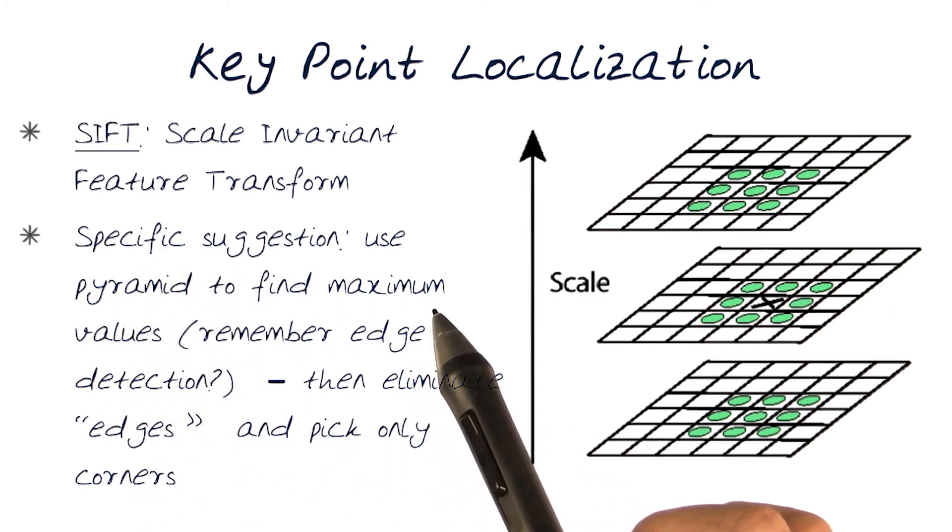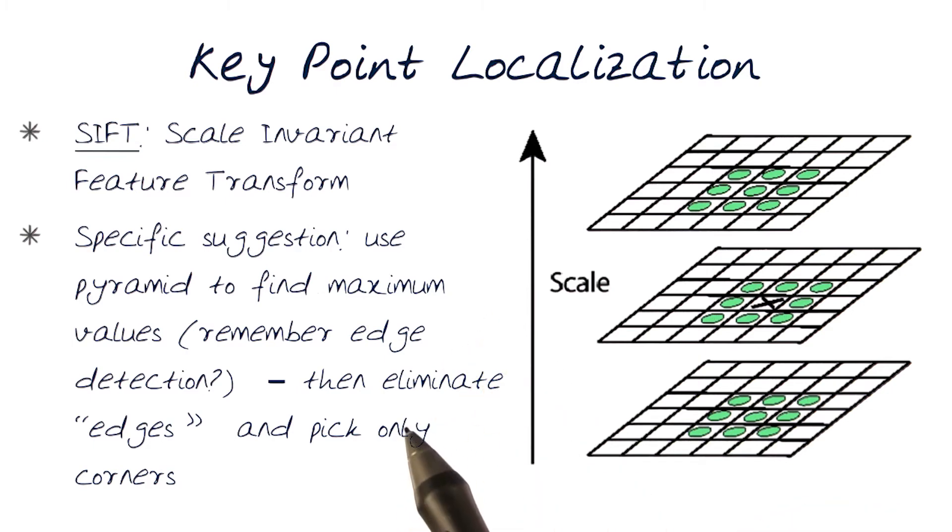We find edges at multiple scales, and then we basically say, okay, which one of them are corners at each and every one of the scales?